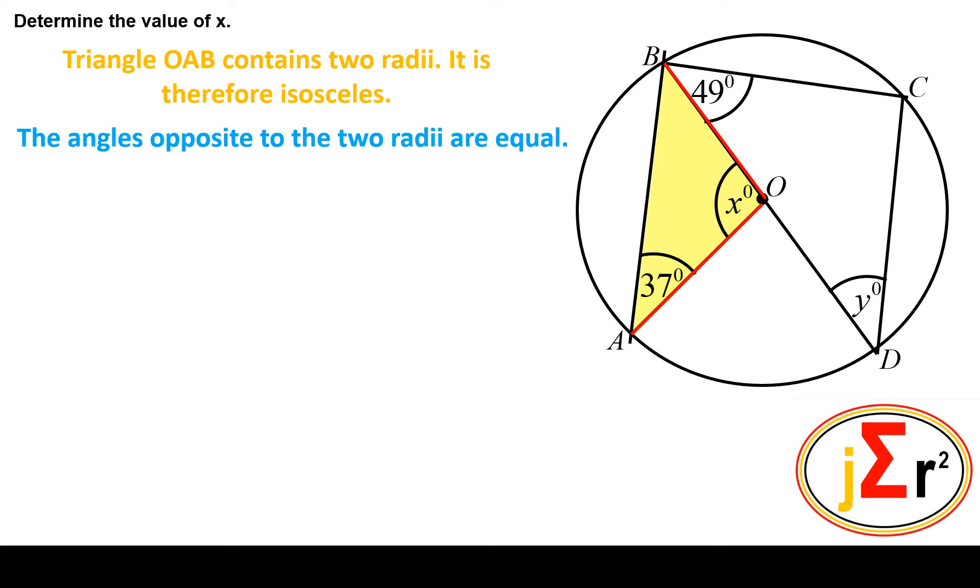The angles that are opposite to the two radii are equal. When we have an isosceles triangle, we will also have two angles in that triangle that are equal, and those two angles are the angles that are opposite to the two equal sides.